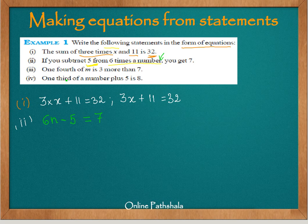Now this one is pretty interesting. The third one, which says that 1 fourth of m is 3 more than 7. Or it means that if I divide m by 4, then it is going to be 3 more than 7, that is 7 plus 3. Or you can say that if I subtract 3 from 1 fourth of a number, then we will get 7. There are multiple ways to look at it.